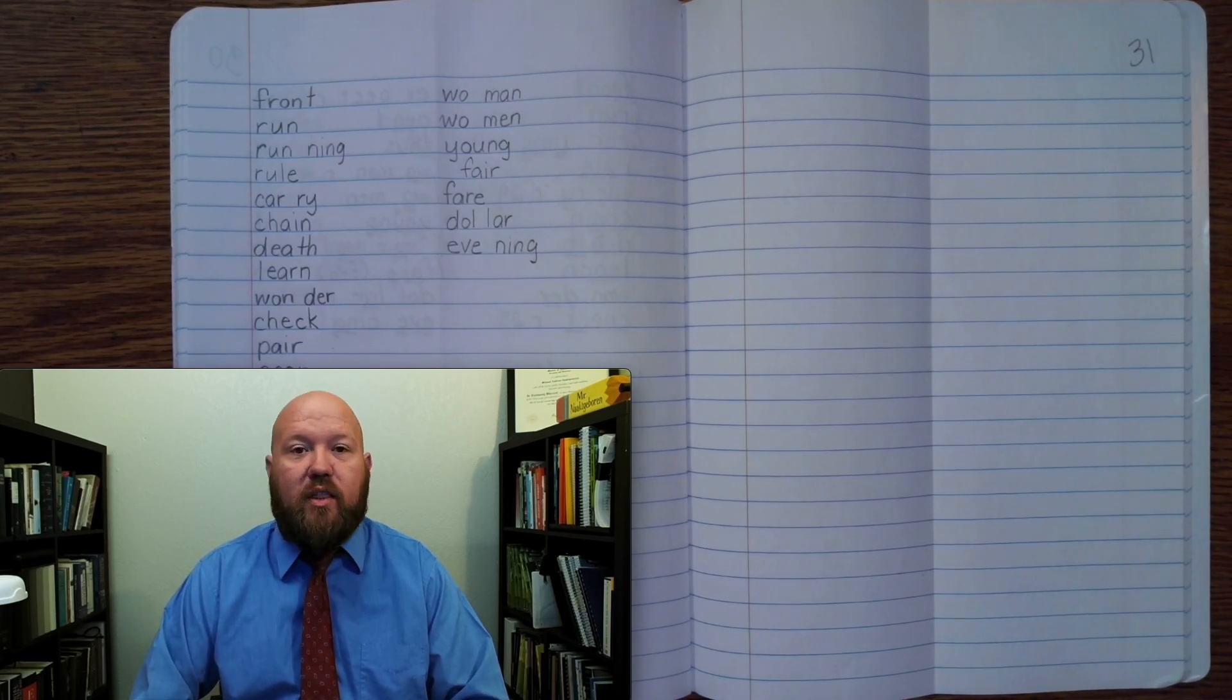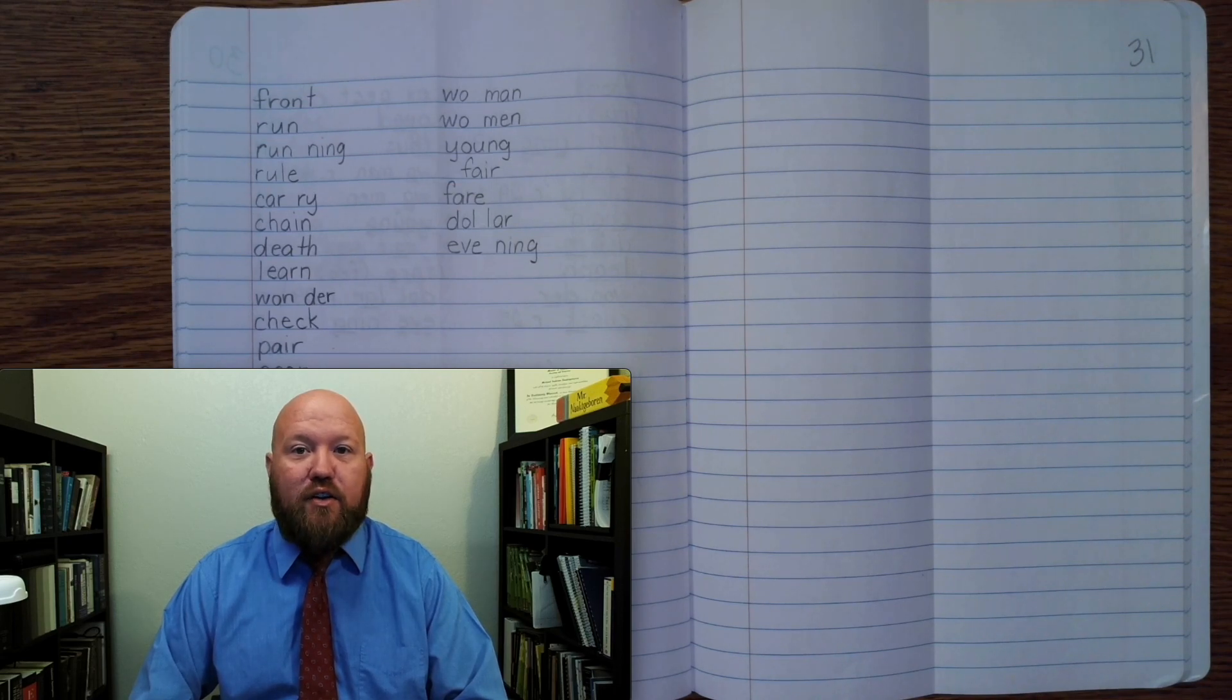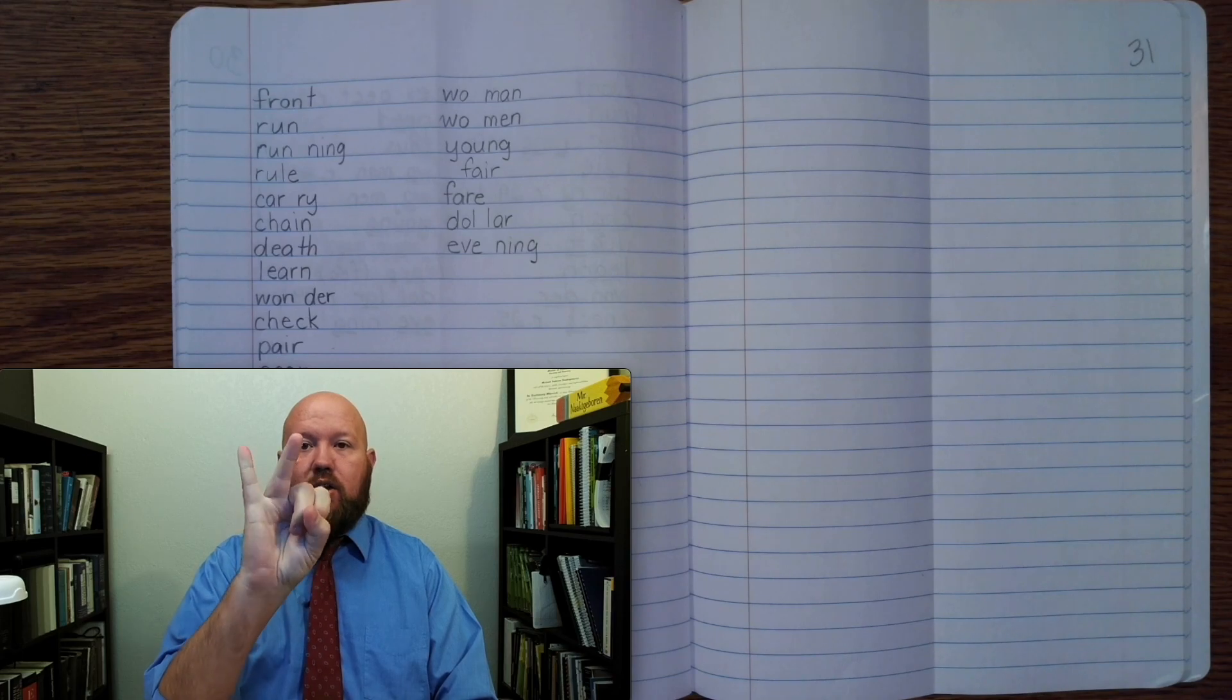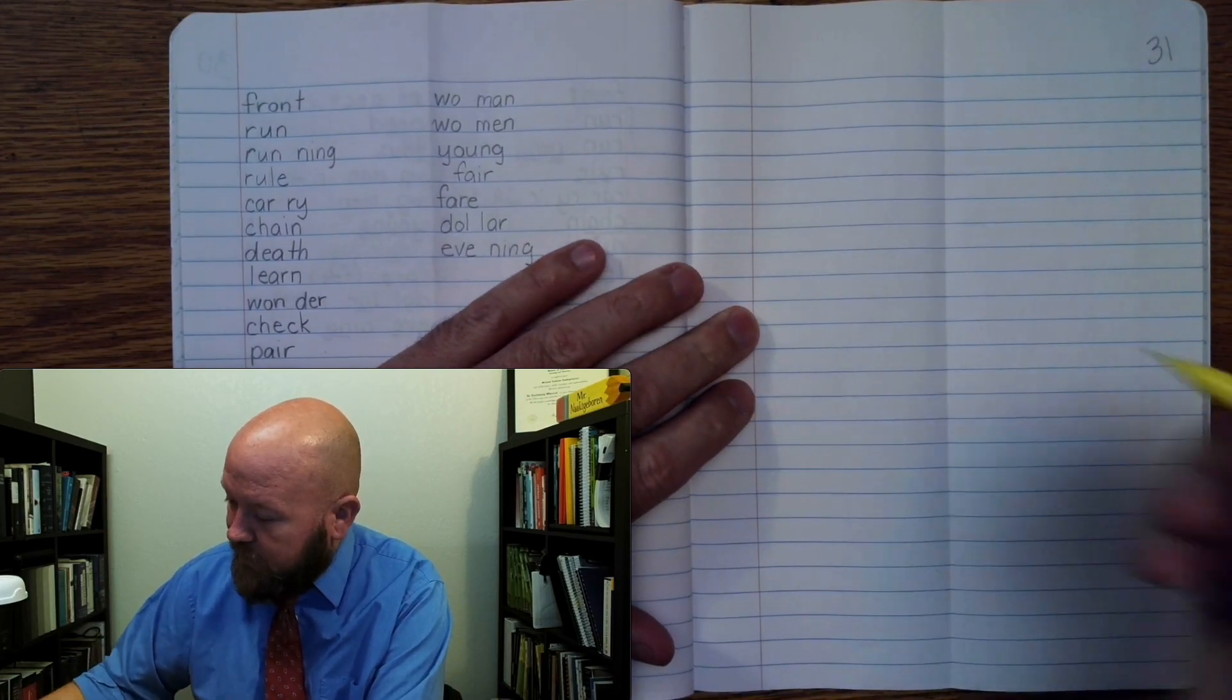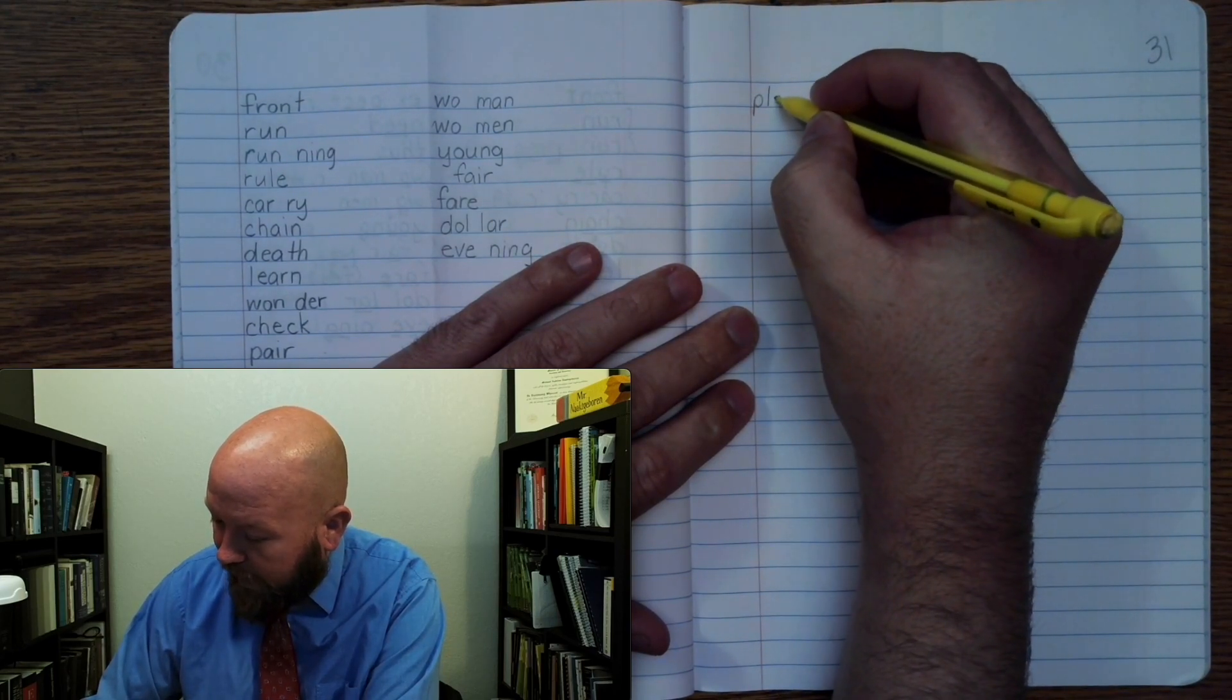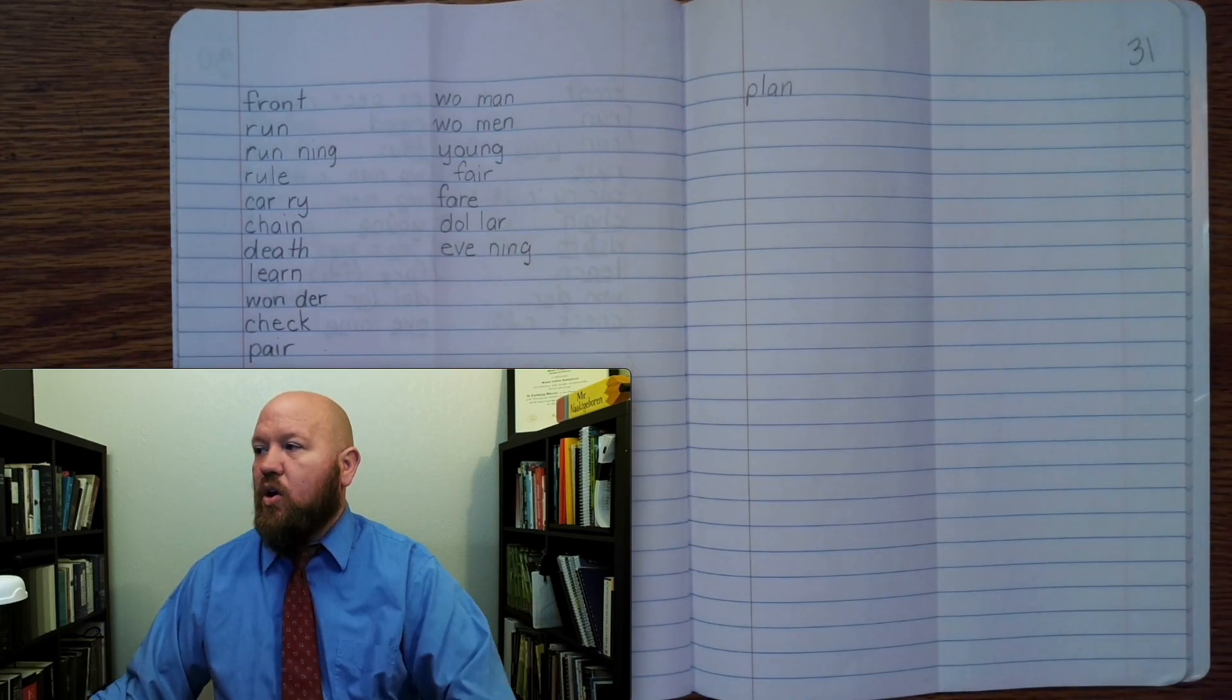Let's look at the first word, and the first word is plan. Like, I want to make a plan on what to do today. Plan. Base word, plan. P-L-A-N. Plan. Okay, write plan. That word has no markings.